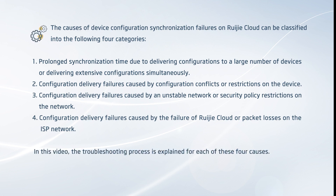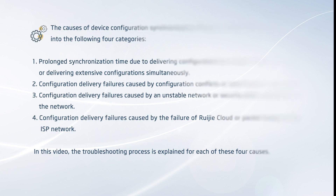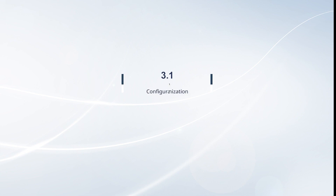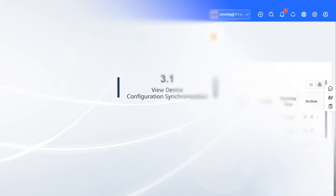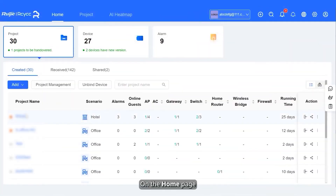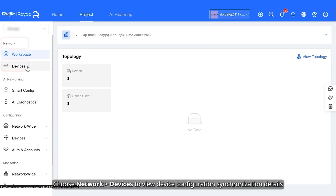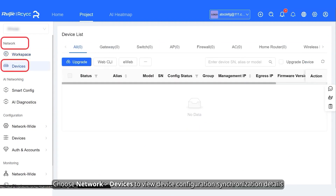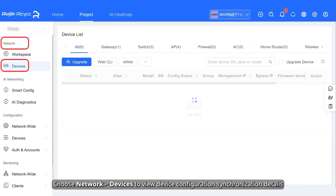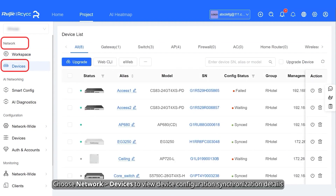In this video, the troubleshooting process is explained for each of these four causes. On the home page, click a project name, then choose Network or Devices to view device configuration synchronization details.